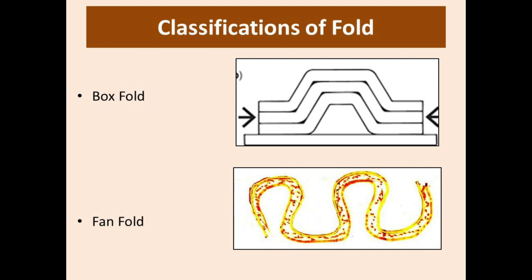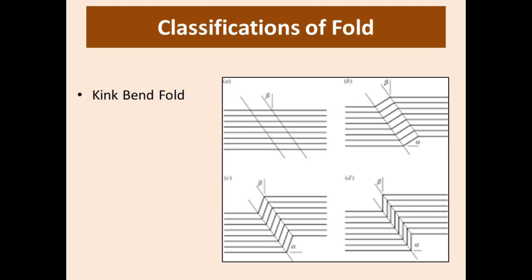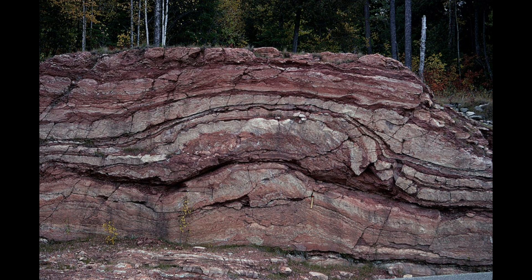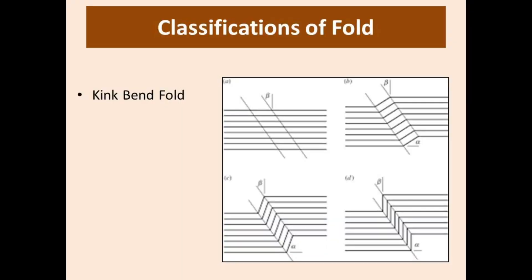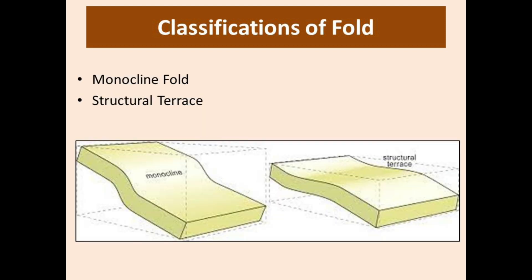In an anticlinal fan fold, both limbs dip towards each other, and in a synclinal fan fold both limbs dip away from each other. Kink band folds are those in which hinges are sharp and limbs are planar; narrow bands of a few inches or feet are present. This is essentially an asymmetrical type fold where beds assume a dip steeper or gentler than adjacent beds.